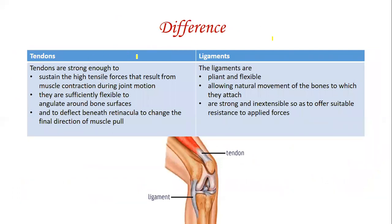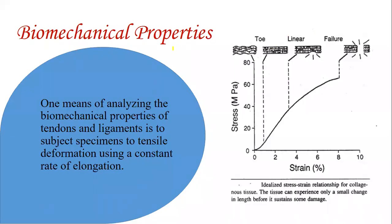The difference between tendons and ligaments: tendons are strong enough to sustain high forces, sufficiently flexible to angulate around bone surfaces, and deflect to change the final direction of muscle pull. Ligaments are soft and flexible, allow natural movements of the bones, and are strong and inextensible to offer sustained resistance to applied force. We will discuss biomechanical properties using a load-elongation graph.